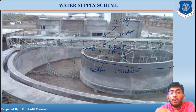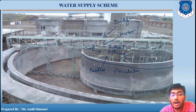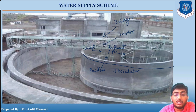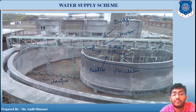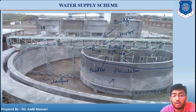In the flocculator, once the flow of water has started, the water will come out of the flocculator and enter this particular space. This space is known as the clarifier - the outer space is known as the clarifier. You can see this is the partition wall.